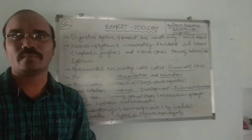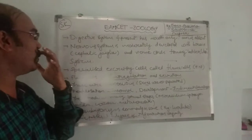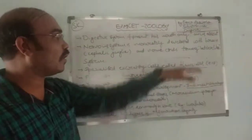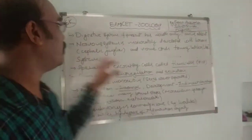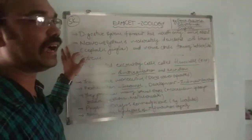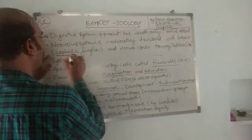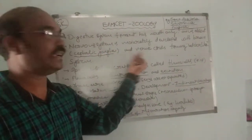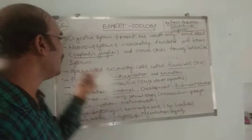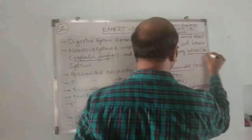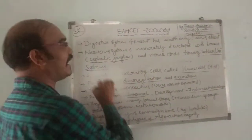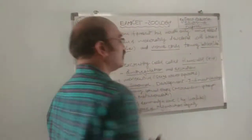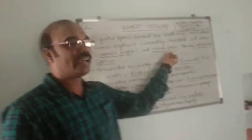Coming to the nervous system: there is moderate development with the brain represented by cephalic ganglia and nerve cords forming a ladder-like system.